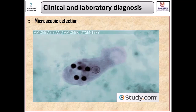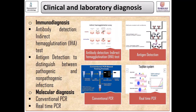Immunological methods are also available for diagnosis of amoebiasis. Antibody detection using the indirect hemagglutination test has been replaced commercially by enzyme immunoassay kits for routine serodiagnosis of amoebiasis, using a crude soluble extract of axenically cultured organisms as antigen. Antigen detection may be useful as an adjunct to microscopic diagnosis in detecting parasites and helps to distinguish between pathogenic and non-pathogenic infections.